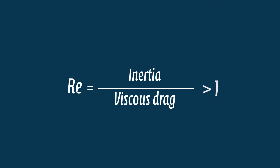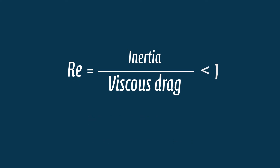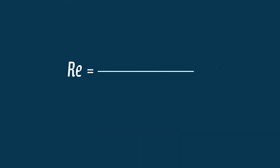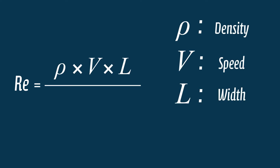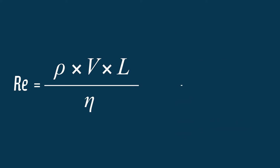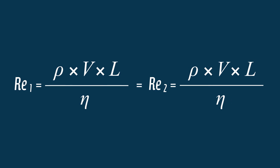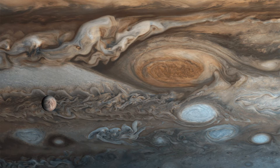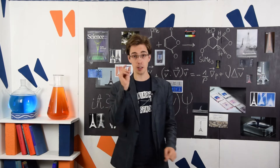If the Reynolds number is greater than 1, inertia prevails over viscous drag, and the flow is turbulent. If it's smaller than 1, viscous drag prevails, and the flow is laminar. For a given flow, this ratio is defined as the fluid's density times its speed times the width of the channel in which it flows, divided by its viscosity. For another flow having a width 10 times greater but also a viscosity 10 times bigger, the Reynolds number stays identical and the flow behaves the same. That's why turbulent wakes are so similar regardless of their size — whether they are in the clouds of Jupiter, in the clouds of planet Earth, inside a rectangular channel, or inside a soap film. That's also the reason why studying centimeter-sized vortices can give us lots of information about kilometric ones.